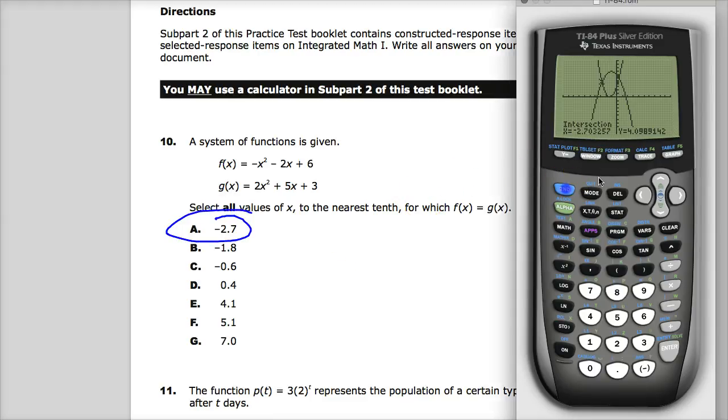The other one intersection. I can hit second trace again and look for another intersection. It'll ask me about the curves again. And then when I guess, I need to bring my little spider mark over here to point out that intersection. And it tells me at 0.369, so somewhere around 0.4.